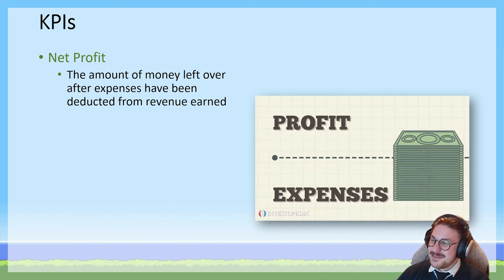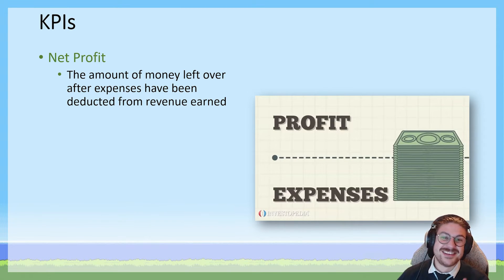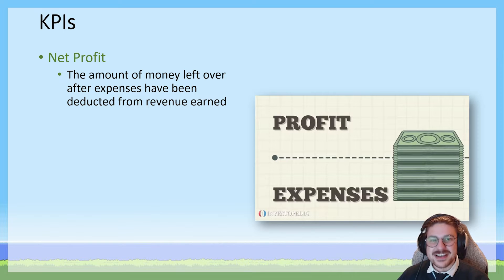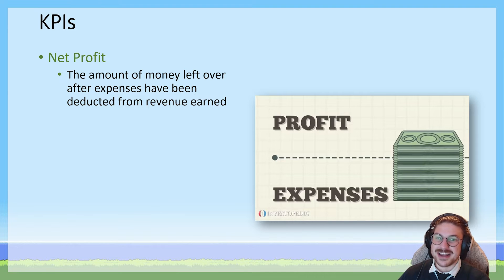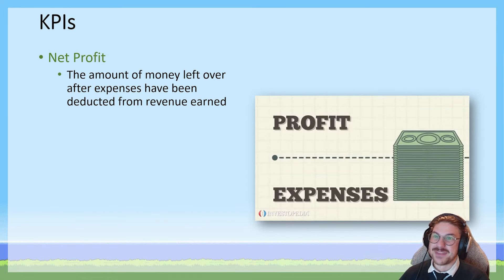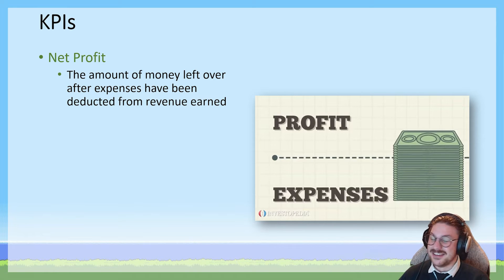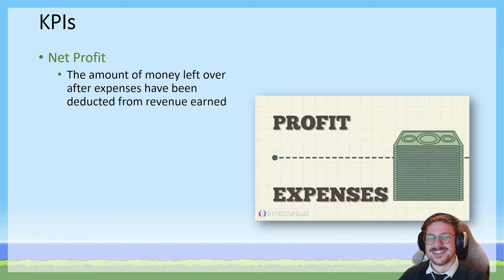The next key performance indicator is net profit, once again directly related to our business objectives from key knowledge point 3.1.2. Net profit is calculated as the money left over after expenses have been deducted — not gross profit, but net profit. This is the money your business has to reinvest after paying dividends and operating expenses. One of our business objectives was to make a profit, so measuring net profit gives you a clear sign of whether your business is healthy or successful.